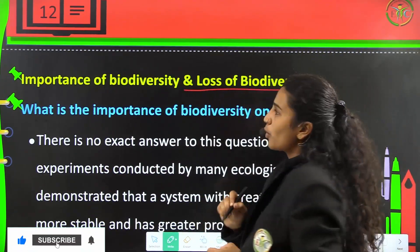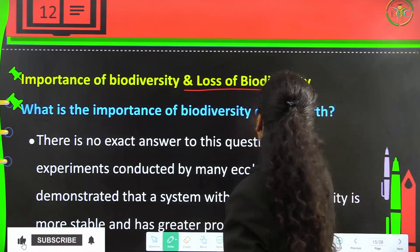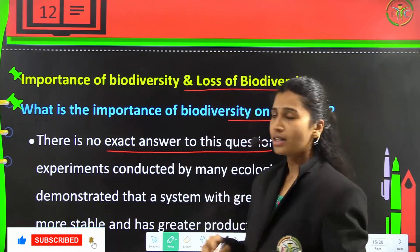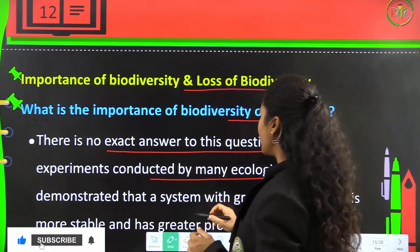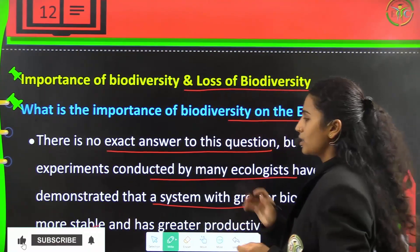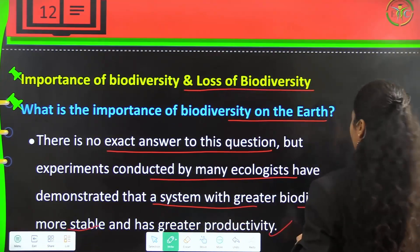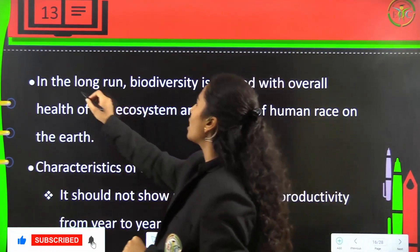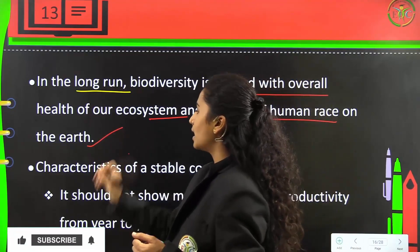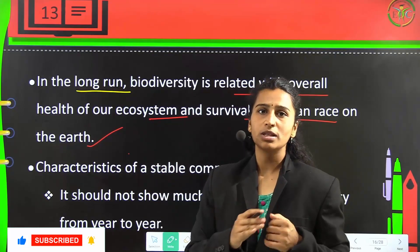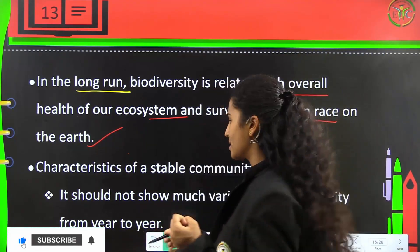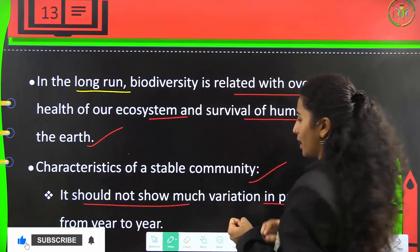The importance of biodiversity and loss of biodiversity: experiments conducted by ecologists have demonstrated that a system with greater biodiversity is more stable than an unstabilized environment and has greater productivity. Biodiversity is related to the overall health of our ecosystem and survival of the human race. A stable community should not show much variation in productivity from year to year.